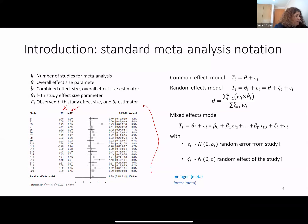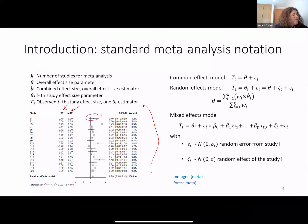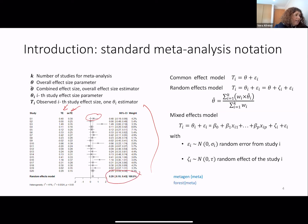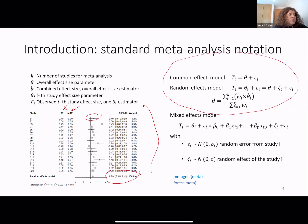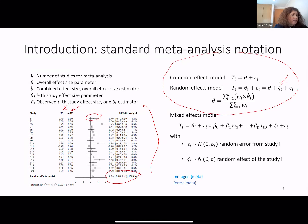In the forest plot, we can describe each study individually by confidence interval, and also the synthesis of evidence through one model. The most popular models are these two: common effects, which assume that all the studies have a common effect, and random effects, which assume some heterogeneity between studies and include this heterogeneity in the model.